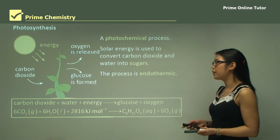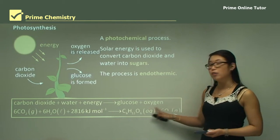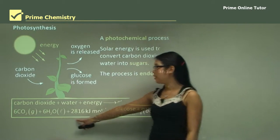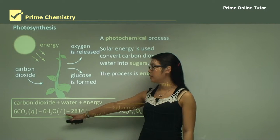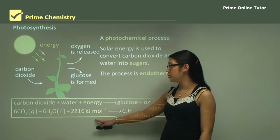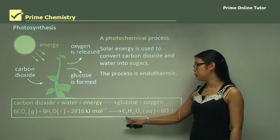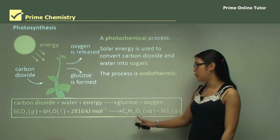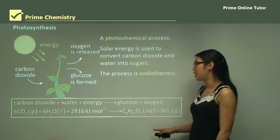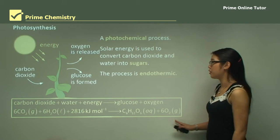Carbon dioxide plus water plus energy forms glucose and oxygen. We can write this chemical equation as six CO2 plus six H2O, with the energy from the sun — 2816 kilojoules per mole — giving us glucose, which is C6H12O6. You need to remember the formula of glucose for all your photosynthesis work. It also produces oxygen — six lots of O2.